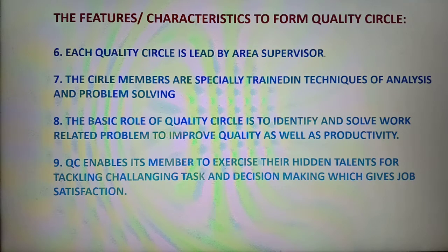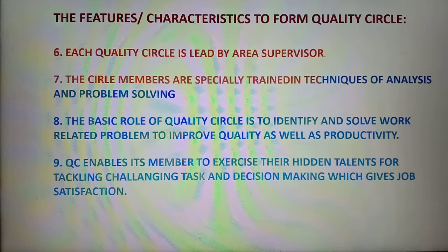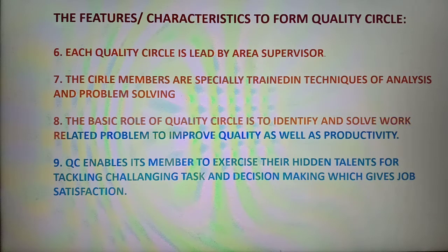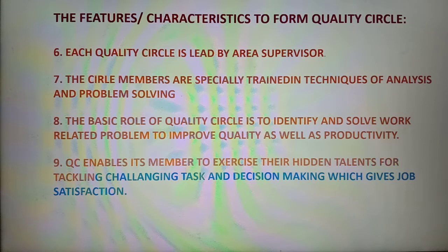Each quality circle is led by an area supervisor. The seventh characteristic is that circle members are specially trained in techniques of analysis and problem solving. The basic role of quality circle is to identify and solve work-related problems to improve quality as well as productivity. Quality circle enables members to exercise their hidden talents for tackling challenges, tasks, and decision making, which gives job satisfaction.